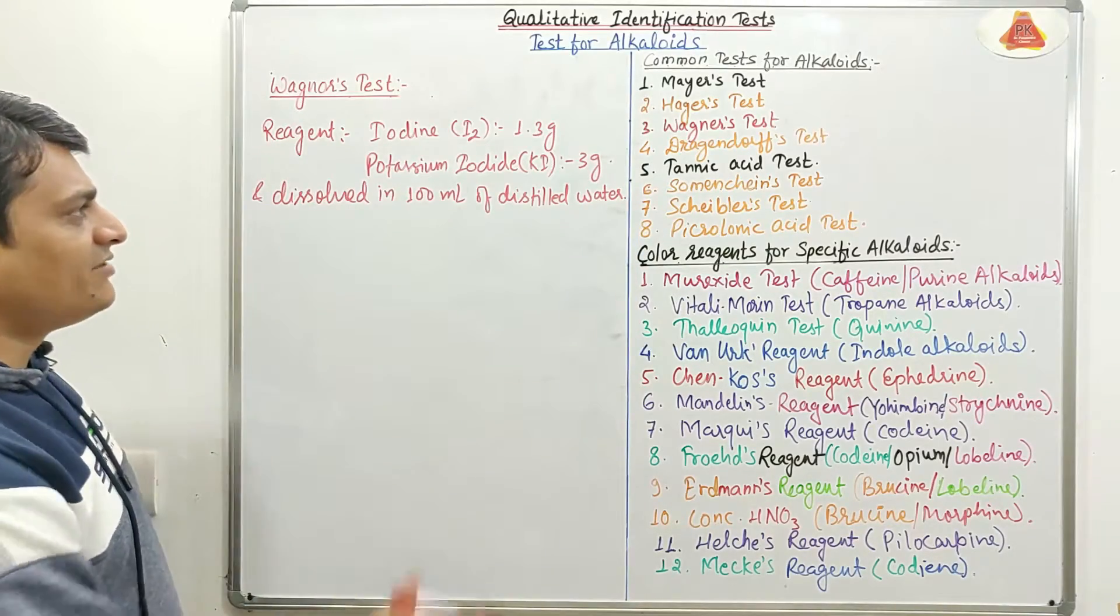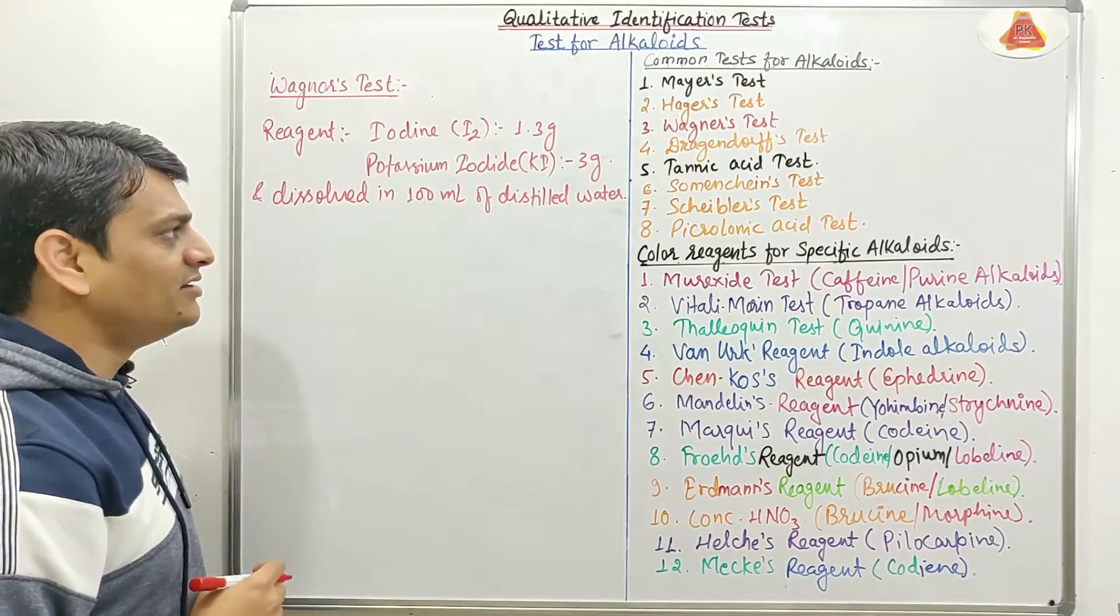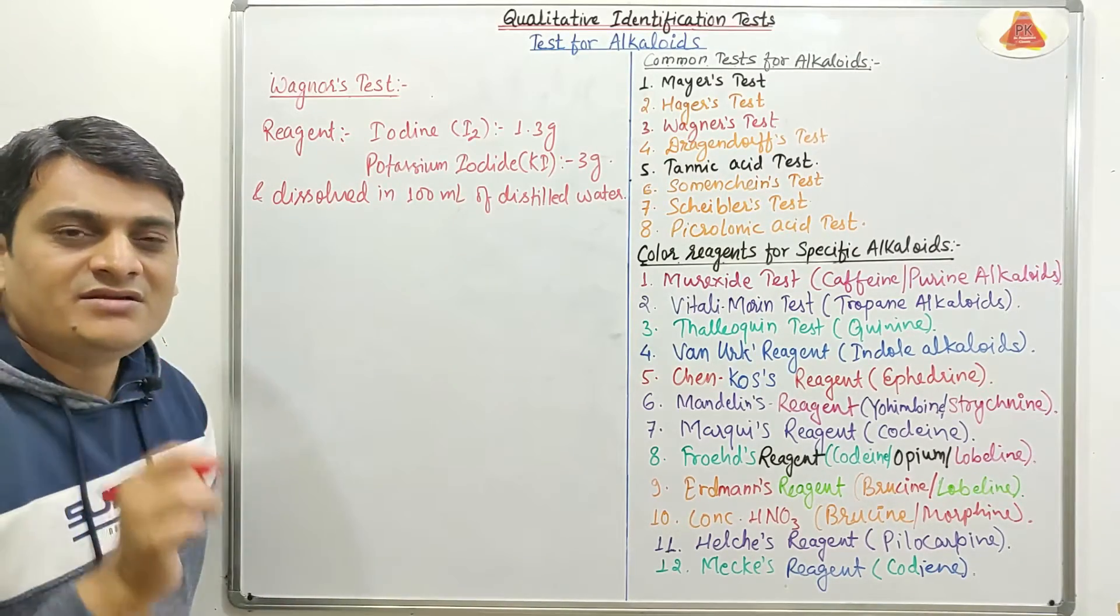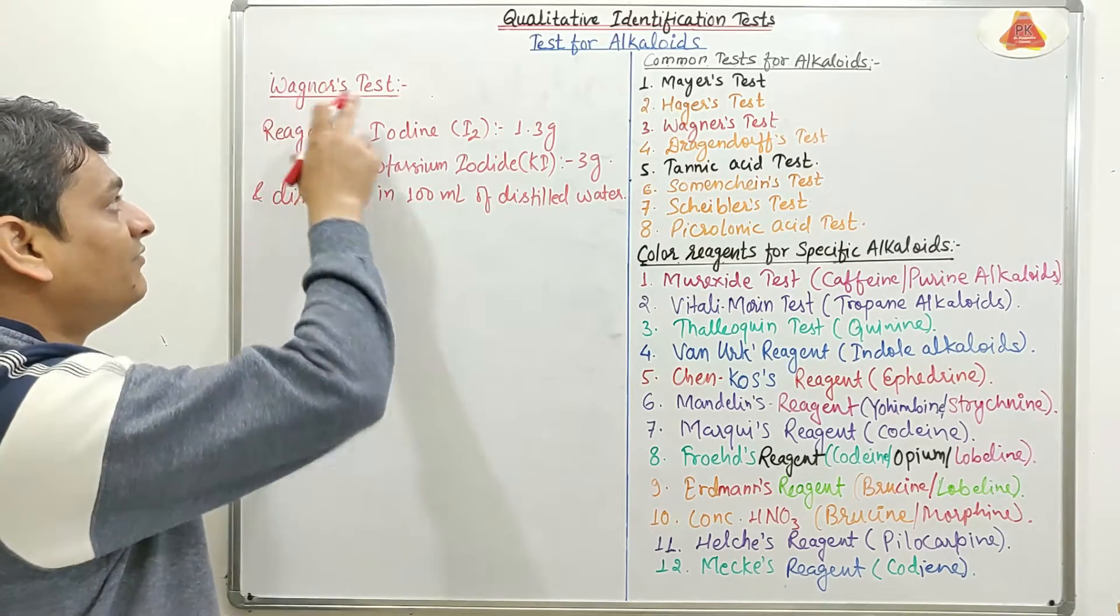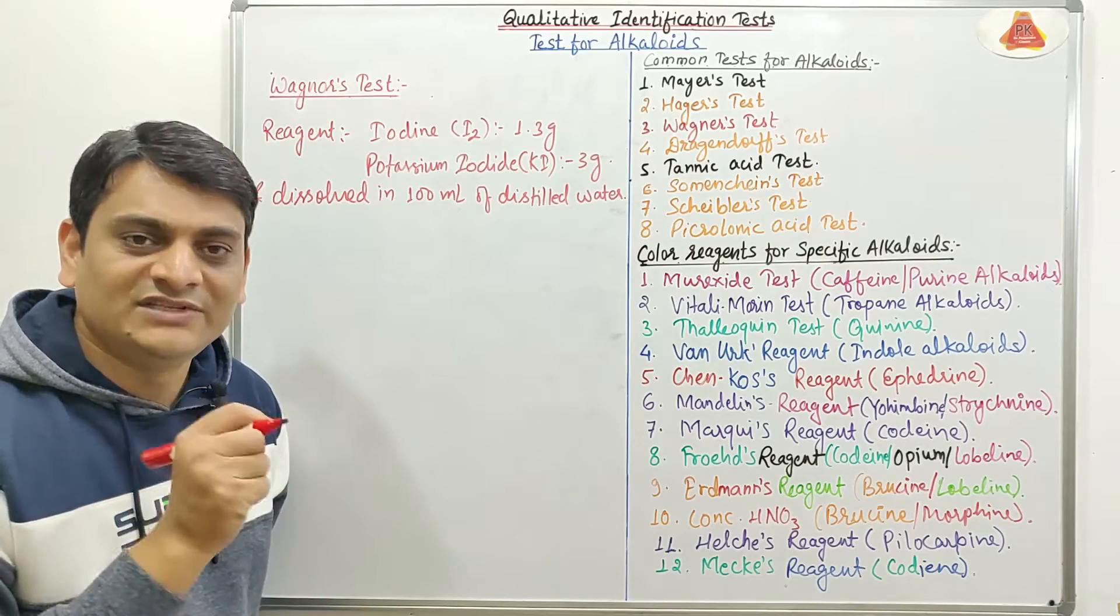So when we take 1.3 grams of iodine and 3 grams of potassium iodide and both are dissolved in 100 ml of distilled water, it will form the Wagner's reagent. Now coming to the methodology for this test, which is very simple.